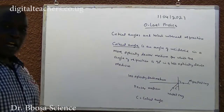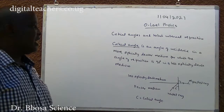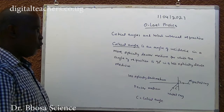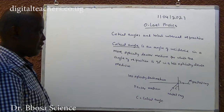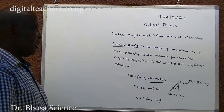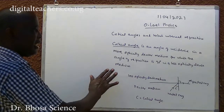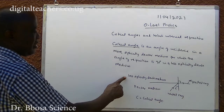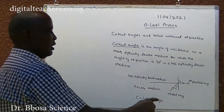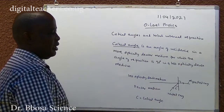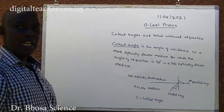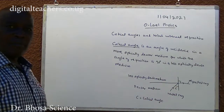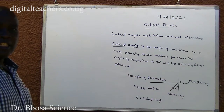The critical angle is an angle of incidence in a more optically dense medium for which the angle of refraction is 90 degrees in a less optically dense medium. From a denser medium to a less dense medium — this is the normal. If C is the critical angle, then the refracted angle in a less dense medium is 90 degrees.